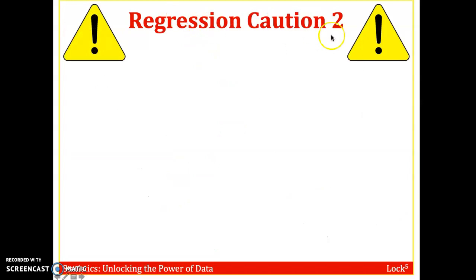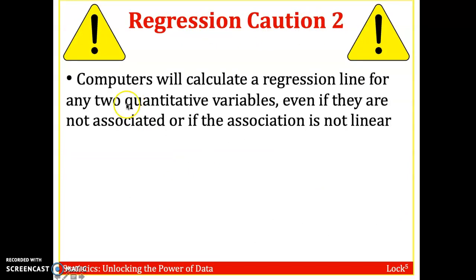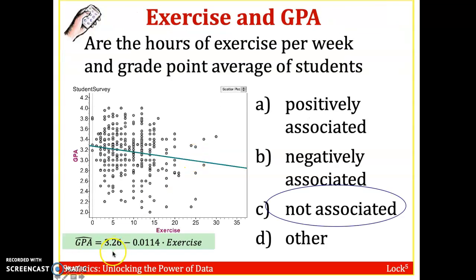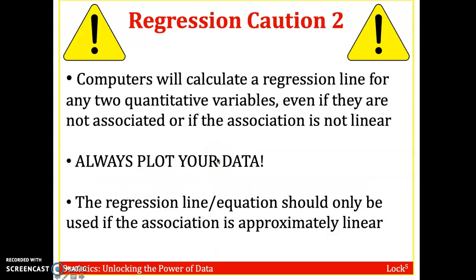And that leads to the second regression caution or warning. Computers or StatKey or whatever software you use will always calculate regression for two quantitative variables, even if they are not associated or if the association is not linear. The idea is always plot your data, I should say, always visualize your data. Plot, visualize your data, because you could get a line of best fit but it might not really make any sense or be able to use any type of prediction when you have an association between two variables. And the idea is the regression line or equation should only be used if the association is approximately linear.